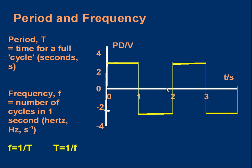The frequency is the number of cycles or oscillations in one second. It's measured in hertz, symbol capital Hz, or equivalently seconds to the minus one. Frequency and period are related: frequency equals one over period, f equals one over T, and therefore T equals one over f.